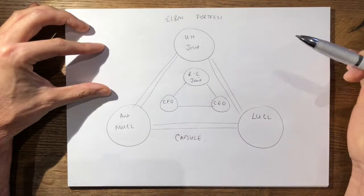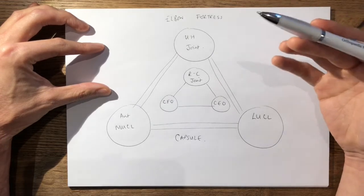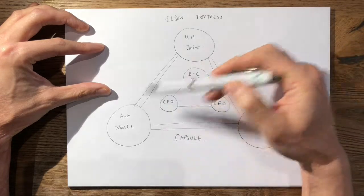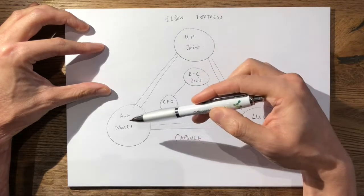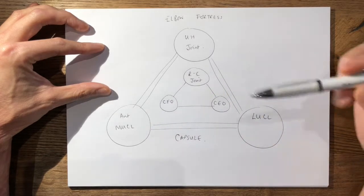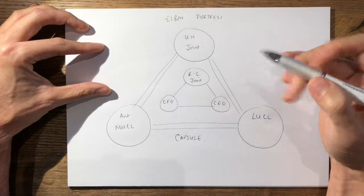So to apply this fortress, O'Driscoll originally said that an elbow with its three primary constraints, i.e. your ulno-humeral joint, anterior band of your medial ulnar collateral ligament, and your LUCL, if three of those are intact, your elbow will be stable. However,